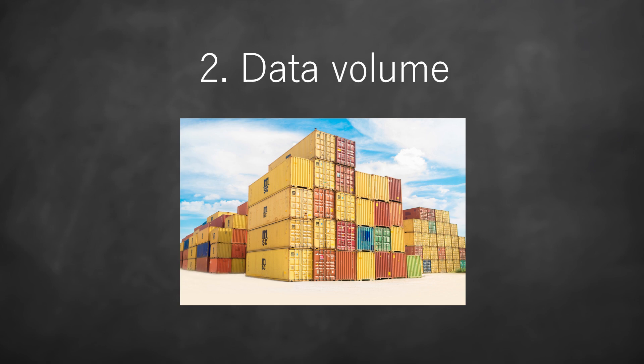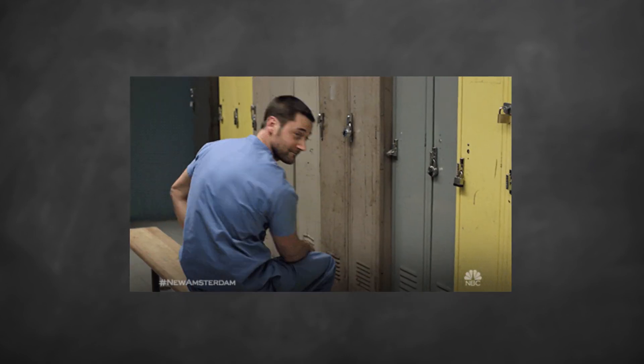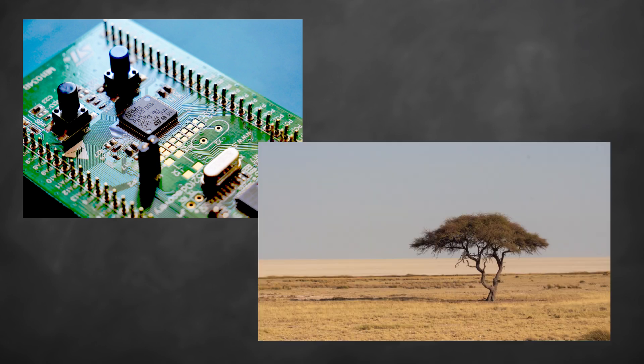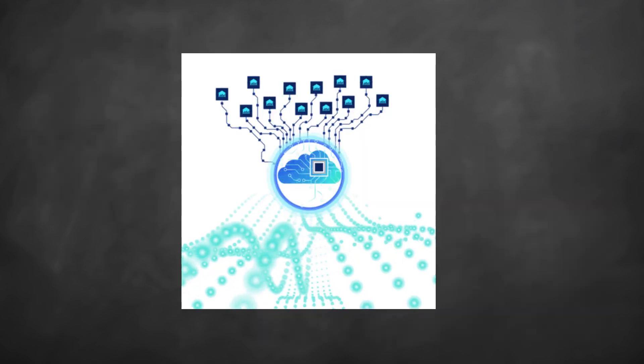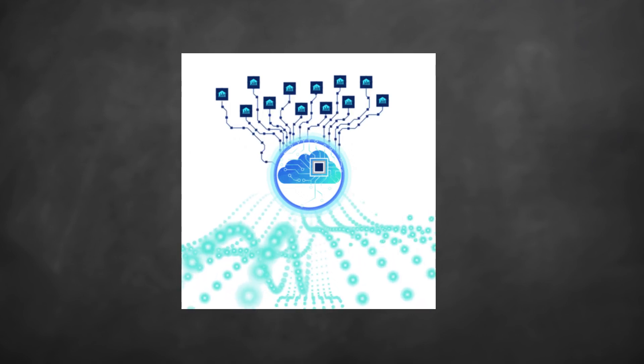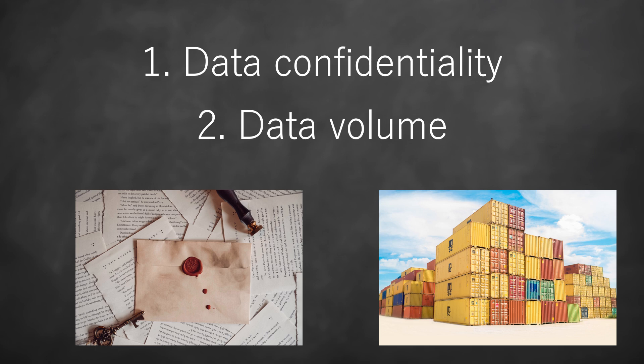We can encounter this problem when working on embedded computing. If sensors collect a lot of data in remote places in the world, it is very likely that they do not have very high bandwidth, making it impossible to repatriate the data to a calculation server. In short, the data exists, but for these two reasons it cannot always move. This is why federated learning was invented.